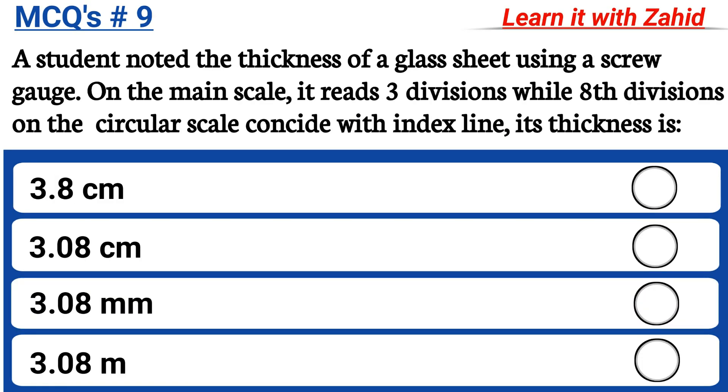A student noted the thickness of a glass sheet using a screw gauge. On the main scale it reads 3 divisions while 8 divisions on the circular scale coincide with index line. Its